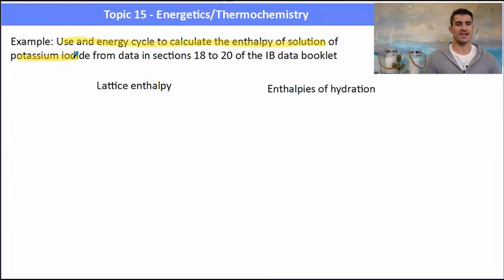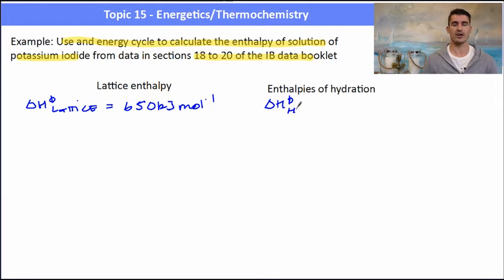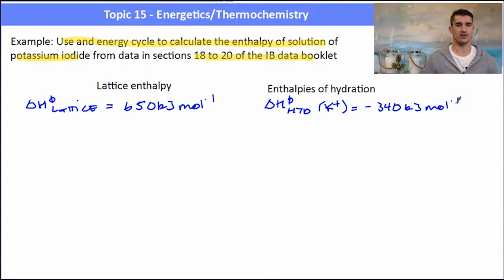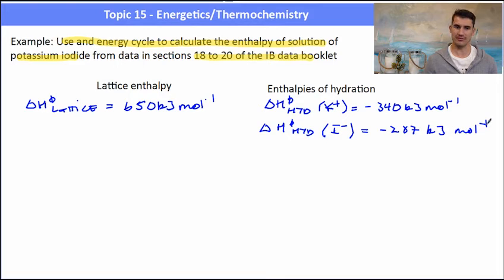Now we're going to use an energy cycle to calculate the enthalpy of solution of potassium iodide. Again, we look in the same location in the data book. The lattice enthalpy of potassium iodide is 650 kJ/mol. The two enthalpies of hydration we need are for the potassium ion and the iodide ion. The ΔH of hydration for K⁺ is −340 kJ/mol, and the ΔH of hydration for I⁻ is −287 kJ/mol.